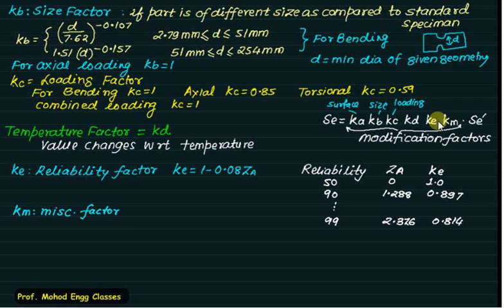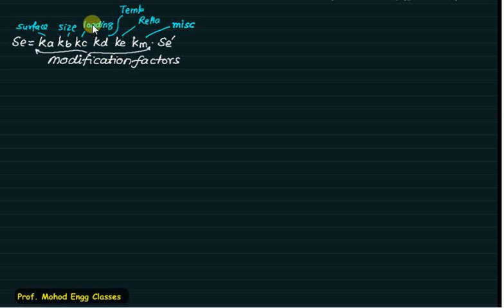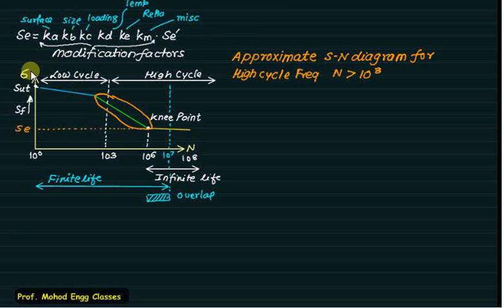KM is the miscellaneous factor, covering any effects not included in the other factors. The laboratory value SE' is modified by all these Marin factors — surface, size, loading, temperature, reliability, and miscellaneous — to obtain the design endurance strength SE used in the SN diagram.